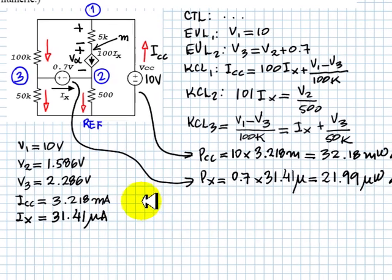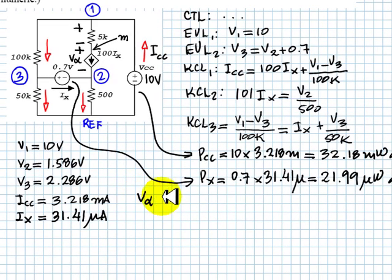Let's write V_alpha. V_alpha is V1, that we know what it is, V1 that is known, it's 10 volts, minus 5000 that multiplies the current, and the current is 3.141 milliamps, minus V2 that is also known. That is the voltage V_alpha.